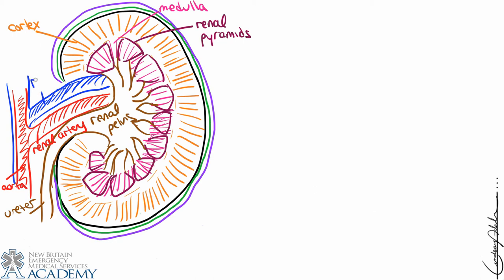We have our vasculature as well: the renal artery and the renal vein. There is a point of entry into the kidney called the hilum. The hilum is basically where we see the entry of the renal artery, the exit of the renal vein, and the exit of the ureter.